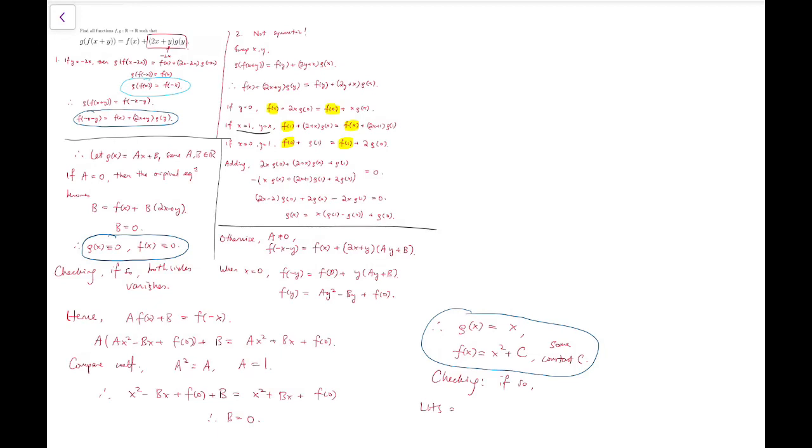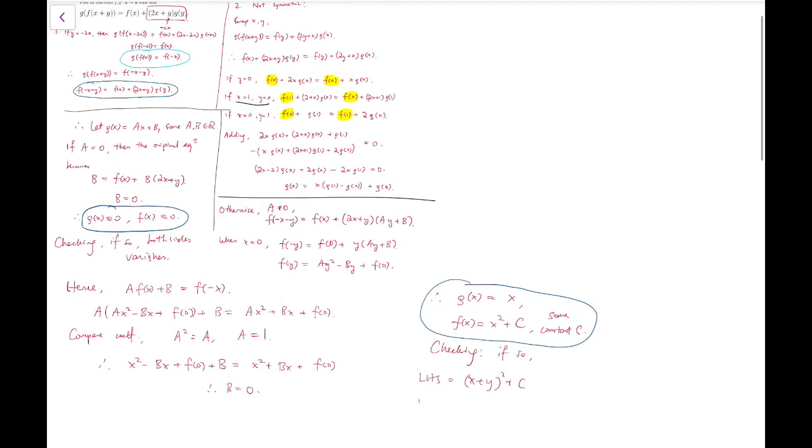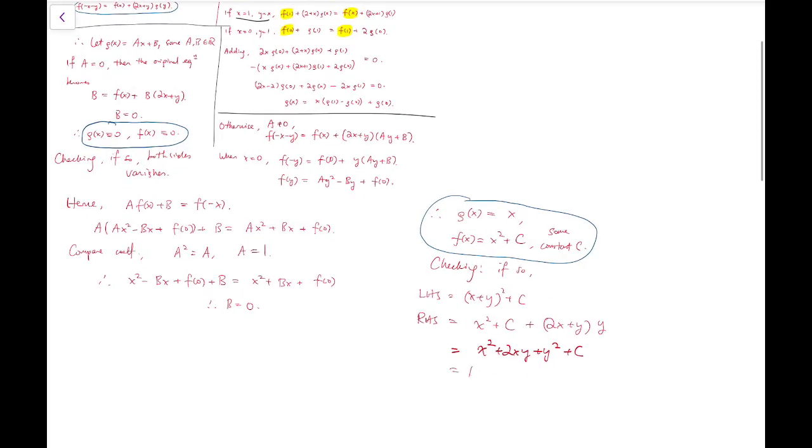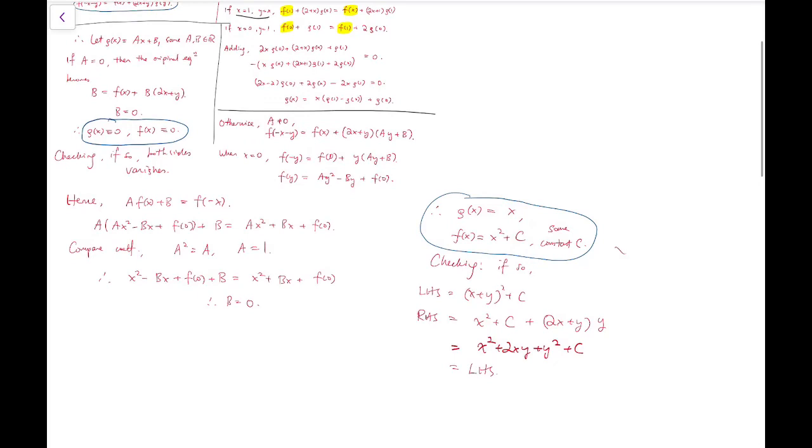The left-hand side would be, because g is simply the identity function, g(f(x+y)) = (x+y)² + c. Now the right-hand side becomes x² + c + (2x+y)·y. Indeed, it's x² + 2xy + y² + c, which equals the left-hand side. So yay, we are done.